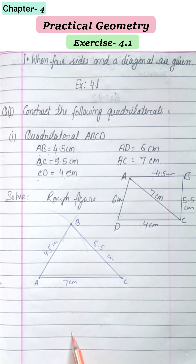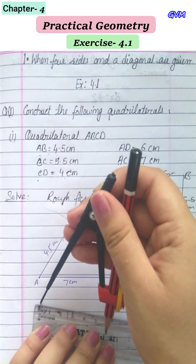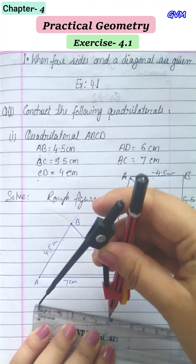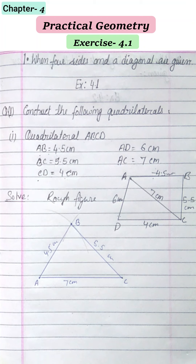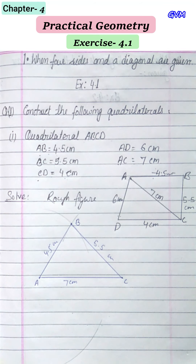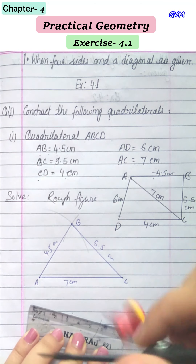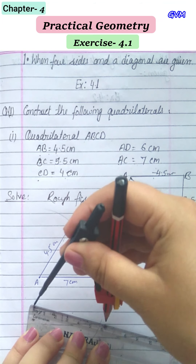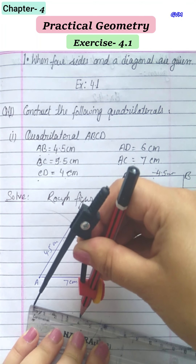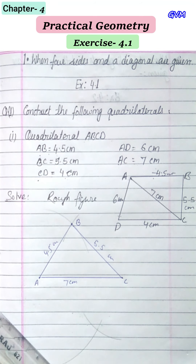Now take a measurement of 6 cm and draw an arc on the opposite side of the diagonal. Take the ruler and compass, put the needle at zero, take 6 cm, put the needle at A, and draw an arc. Then take 4 cm from C — put the needle at zero, take 4 cm, put the needle at C, and draw that arc.